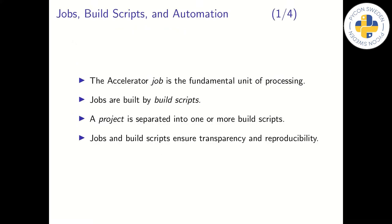In accelerator lingo, a job is the fundamental unit of processing. Jobs are issued or built by build script, and the project is composed of one or more build scripts. It is clear that the script may be used to automate a process, but using the accelerator it does not stop there. The accelerator's build scripts and jobs will together ensure complete transparency and reproducibility of the whole project. In the next slides, we will show how it works.